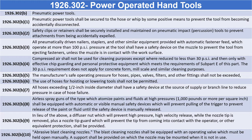1926.302(b)(6): The use of hoses for hoisting or lowering tools shall not be permitted. 1926.302(b)(7): All hoses exceeding half an inch inside diameter shall have a safety device at the source of supply or branch line to reduce pressure in case of hose failure. 1926.302(b)(8): Airless spray guns of the type which atomize paints and fluids at high pressures (1,000 pounds or more per square inch) shall be equipped with automatic or visible manual safety devices to prevent pulling of the trigger until the safety device is manually released.